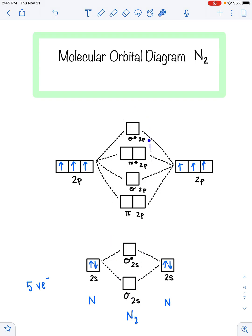So 1, 2, 3, 4, 5, 6, 7, 8, 9, 10. And that's the molecular orbital diagram for N2.